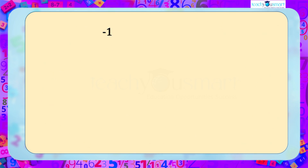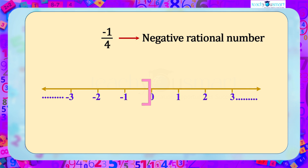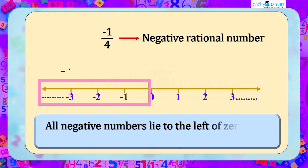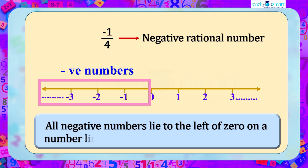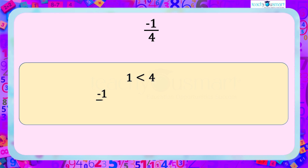Here, -1/4 is a negative rational number, and we know that all negative numbers lie to the left of 0. Since the numerator 1 is less than the denominator 4, we know -1/4 lies between 0 and -1.